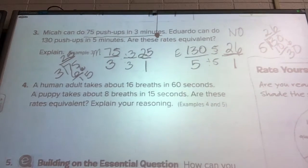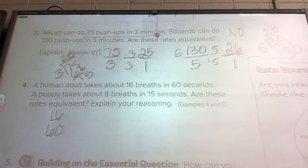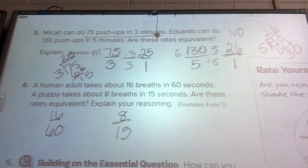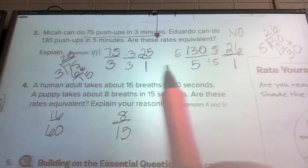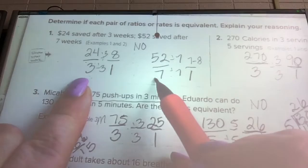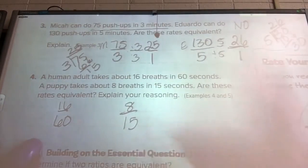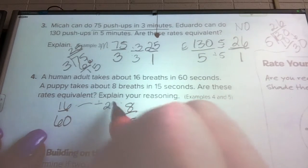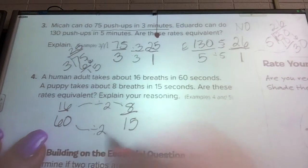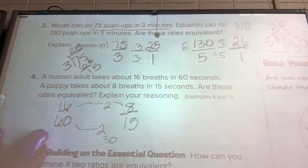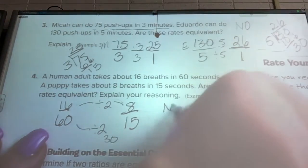A human adult takes 16 breaths in 60 seconds, a puppy takes about 8 breaths in 15 seconds. Are these rates equivalent? There's two ways we could do this. I can tell these numbers are compatible. We got 16 and 8, I know that both of those are multiples of 8. To get 16 to 8, I could divide by 2. So what I do on the top, if I do the same on the bottom, 60 divided by 2, what's half of 60? It would be 30. Well, we have 15. So are they equivalent? No.